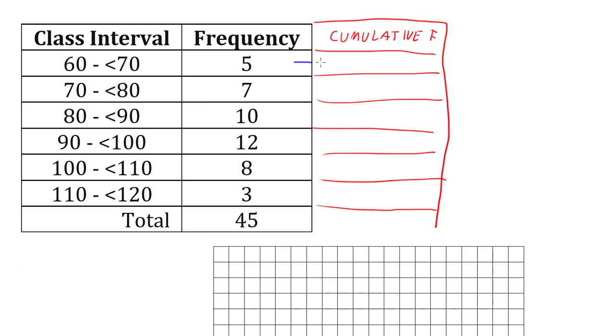And to do that, we take our first frequency and we accumulate it, we add it on. So we just take our first one and put 5 there, as this is us accumulating the first one.